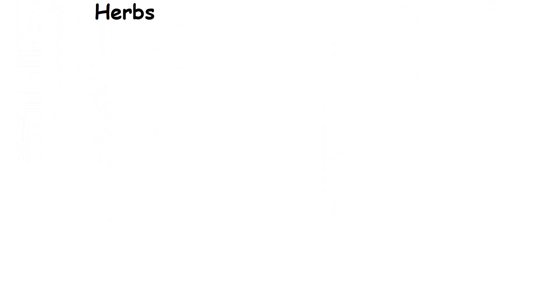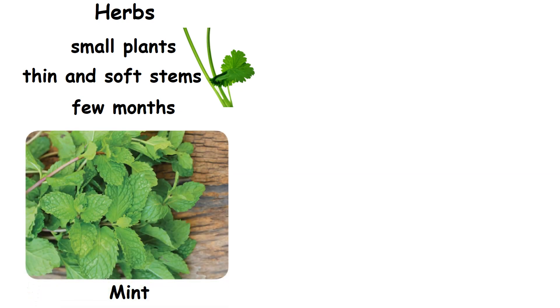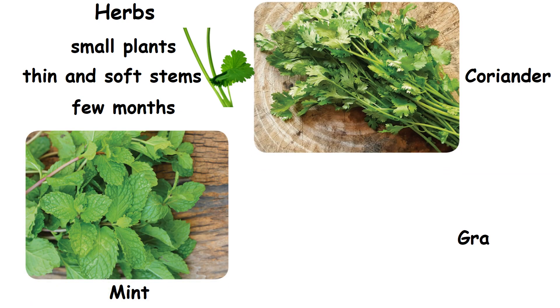Herbs. Herbs are small plants with thin and soft stems. Most of them live for a few months only. Examples: mint, coriander and grass.